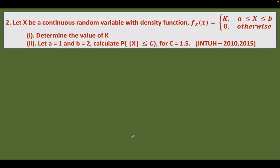Now let us go to the other problem, asked in 2010 as well as 2015. Here X is a continuous random variable with density function f(x) = k, defined between a and b, and 0 otherwise. We need to find the value of k and also find the probability of the random variable X which is less than or equals to c, where c = 1.5.